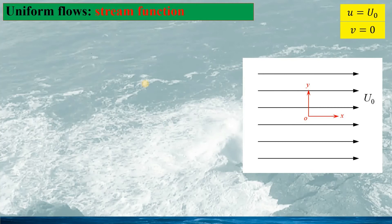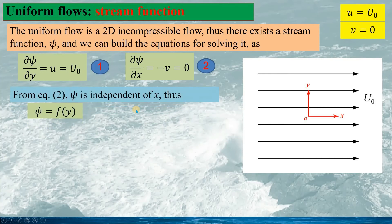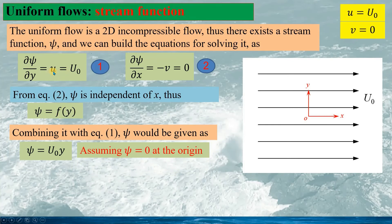Similar to the potential function, we can build equations for the stream function ψ in this 2D incompressible flow. The stream function is defined by: ∂ψ/∂y = u and ∂ψ/∂x = −v. From the second equation, ψ is independent of x and can be expressed as a function of y only. Combining with the first equation, we find the stream function ψ = u0·y, again assuming ψ = 0 at the origin.